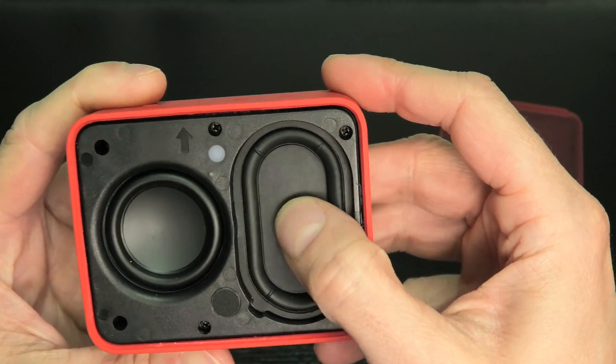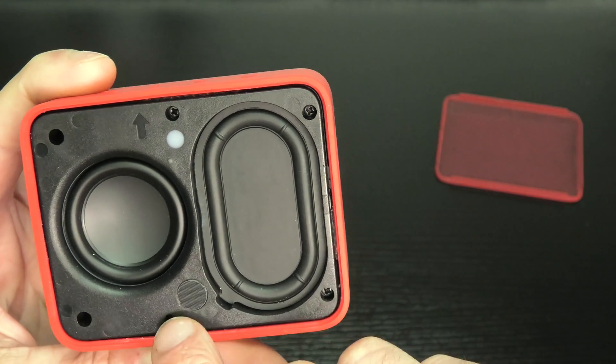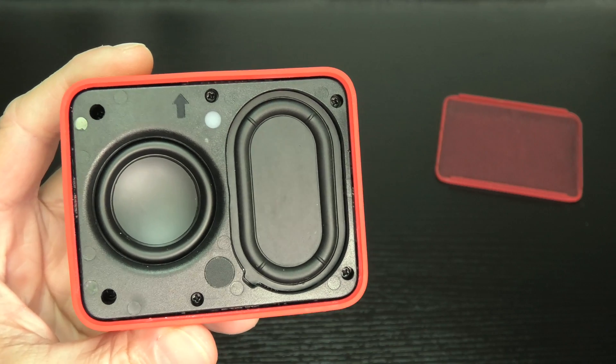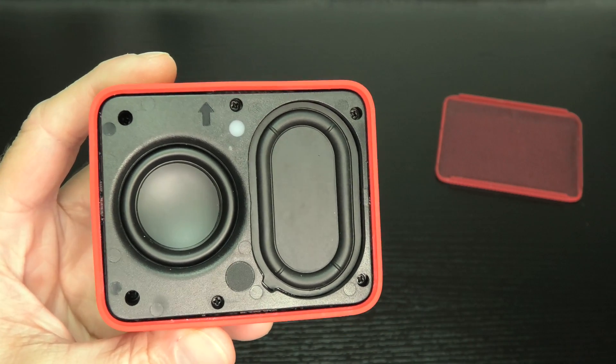And now we have here the next cover with the transducer 40mm and the passive radiator and it's held down with six screws. I'm going to remove those here.